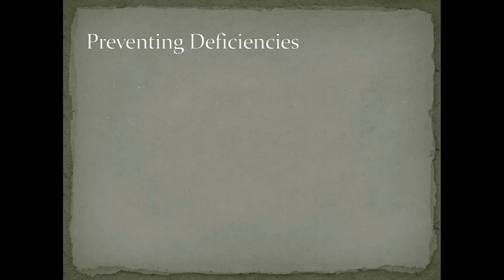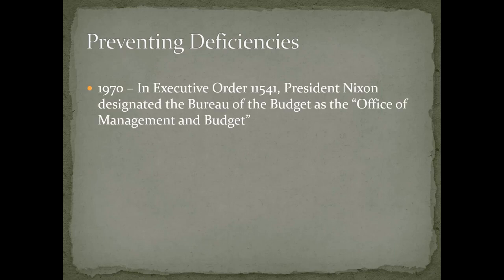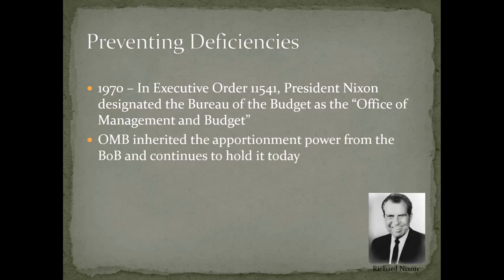In 1970, Executive Order 11541 designated the Bureau of the Budget as the Office of Management and Budget. OMB inherited the apportionment power from the Bureau of the Budget and continues to hold it today.